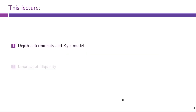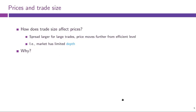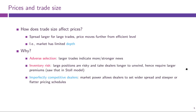Let us begin with our first question for today: determinants of market depth. The question is how does trade size affect prices? In the real world, the spread is generically larger for large trades. The larger the trade size, the further away the price moves from the efficient level. This is just a definition of limited market depth. The question is why — why do traders have to pay more when they want to trade large amounts? Let us look at the factors we already know and see whether they can answer this question.